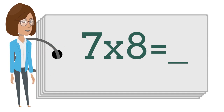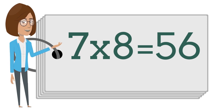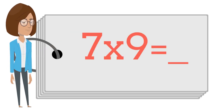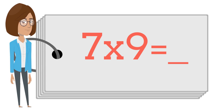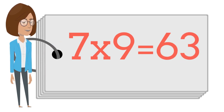7 times 8 is — say the answer out loud. 7 times 9 is — say the answer out loud. 7 times 9 is 63.